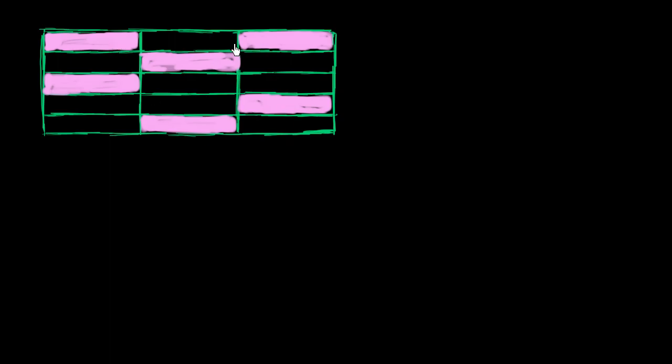You could also count them: 1, 2, 3, 4, 5, 6, 7, 8, 9, 10, 11, 12, 13, 14, 15. So there are 15 equal sections here.